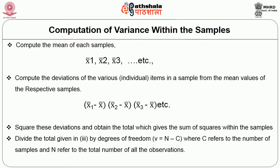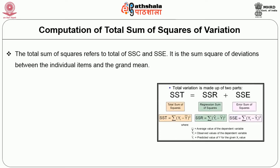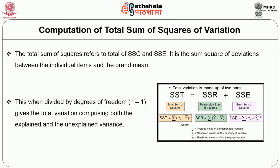The total sum of squares refers to the total of SSC and SSE. It is the sum of squares of deviations between the individual items and the grand mean. When divided by degrees of freedom (N − 1), it gives the total variation comprising both the explained and the unexplained variance.